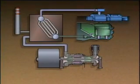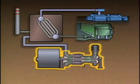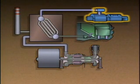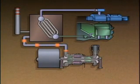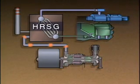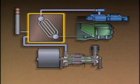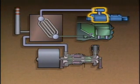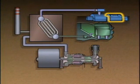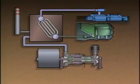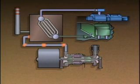In a combined cycle plant, the exhaust gases from a gas turbine are used to produce steam to drive a steam turbine. The hot exhaust gases that leave the gas turbine are routed to a heat recovery steam generator, or HRSG. In the HRSG, the exhaust gases transfer heat to water to produce steam. The steam is sent to the steam turbine, where some of the energy in the steam is converted into mechanical energy, and then into electricity by a second generator. This increases the efficiency of the plant, since more of the energy in the exhaust gases is used before they are released.